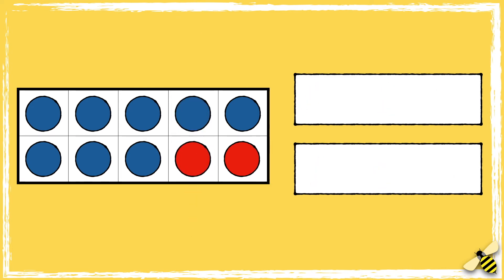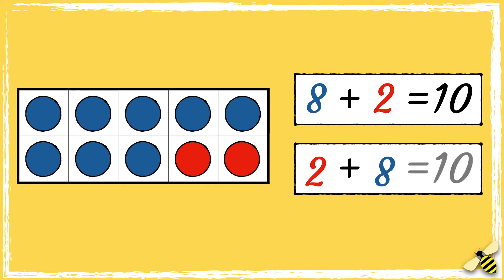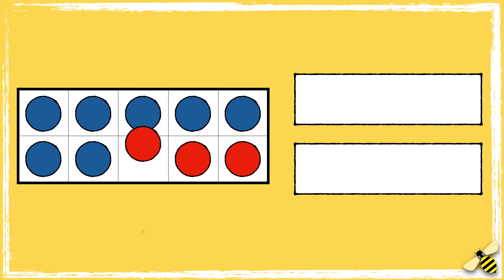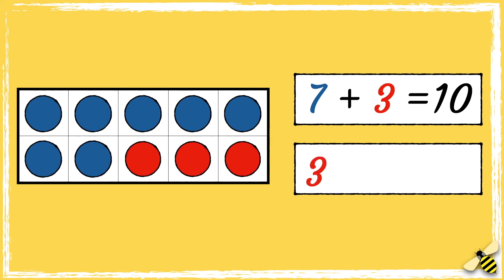8 add 2 equals 10. Or we could say 2 add 8 equals 10. 7 add 3 equals 10. Or 3 add 7 equals 10.